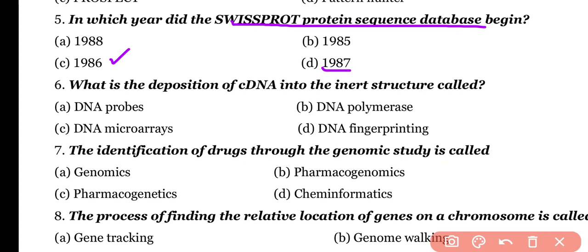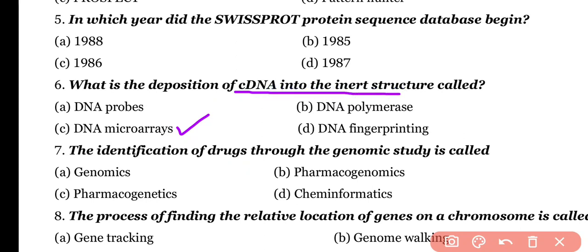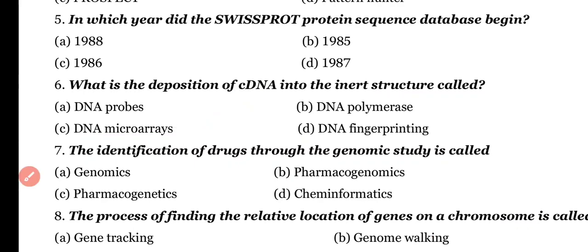Question number 6. What is the deposition of cDNA into an inert structure called? Options: DNA probes, DNA polymerase, DNA microarrays, DNA fingerprinting. Correct answer is option C. cDNA, or complementary DNA, deposits to form an inert structure that is known as DNA microarrays.